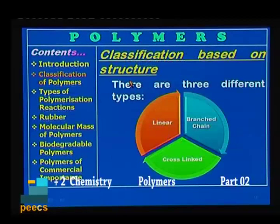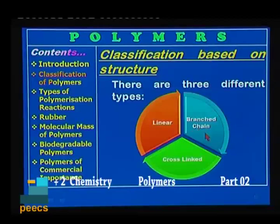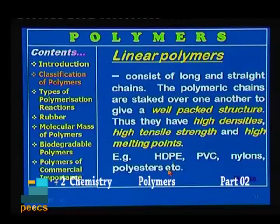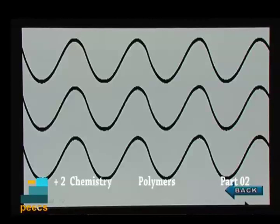We can also classify polymers based on their structure. There are three different types: linear polymers, branched chain polymers, and cross-linked polymers. Linear polymers consist of long and straight chains. The polymeric chains are stacked over one another to give a well-packed structure. Thus, they have high densities, high tensile strength, and high melting points. Examples are HDPE (high density polyethylene), PVC (polyvinyl chloride), nylons, and polyesters.